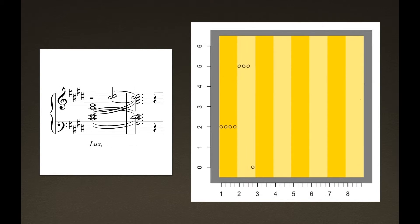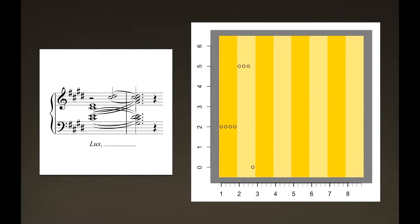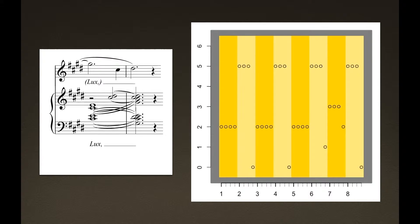The harmonic shift in the second measure further defies expectations, skipping over triads and seventh chords in favor of a five-note cluster. This two-bar progression is repeated three additional times, although in the fourth iteration a descant G-sharp completes the tonic triad — an anomaly that should be interpreted as contrapuntal rather than harmonic.